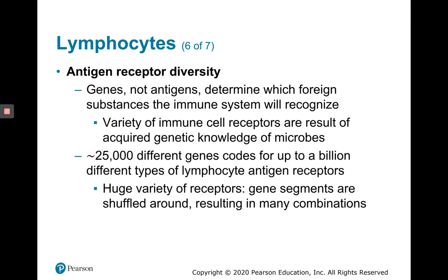Antigen receptor diversity involves receptors that bind to one specific antigen. It's the genes of an individual, not the antigens themselves, that determine which foreign substances the immune system will recognize. There are about 25,000 different genes that code for up to a billion different types of lymphocyte antigen receptors. These genes create proteins that are shuffled and recombined, where gene segments are shuffled around to result in many receptor combinations.